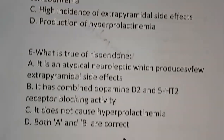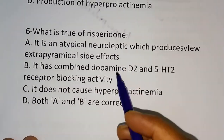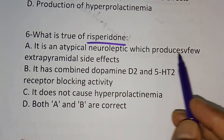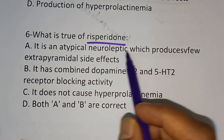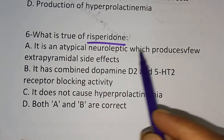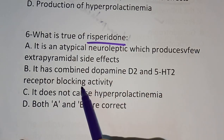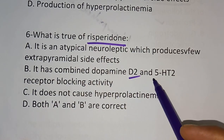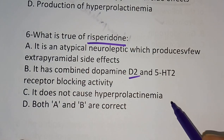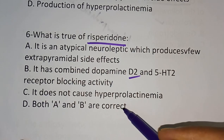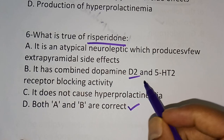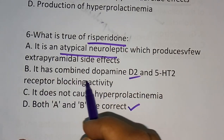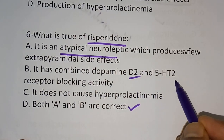Question 6: What is true about risperidone? Risperidone is also an atypical antipsychotic. Options are: it is an atypical neuroleptic which produces few extrapyramidal side effects; it has combined D2 as well as 5HT2 blocking activity; it does not cause hyperprolactinemia; both A and B are correct. The correct answer is option D — both A and B are correct. Risperidone has D2 as well as 5HT2 blocking activity.